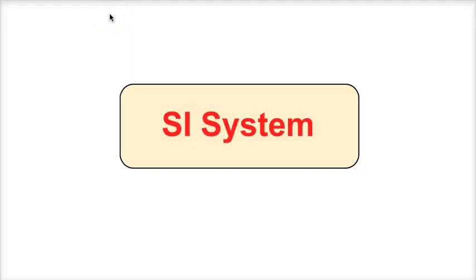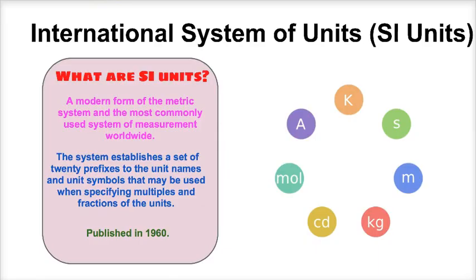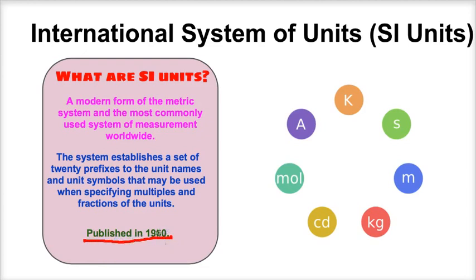Hey, this is Mr. Millings and today we're going to learn about the SI system of units, or the metric system. So what is SI and how does it work? Well, SI stands for System International. The metric system was first published in 1960 during a conference held in France that contained a lot of the top scientists, mathematicians, and engineers from around the world.